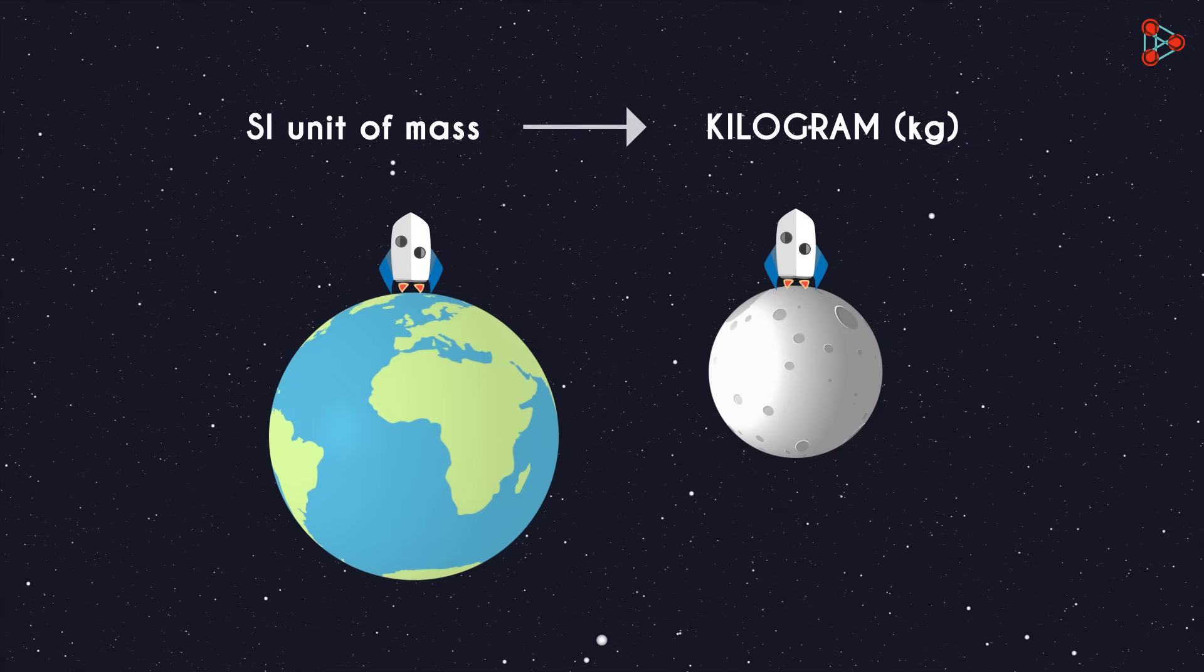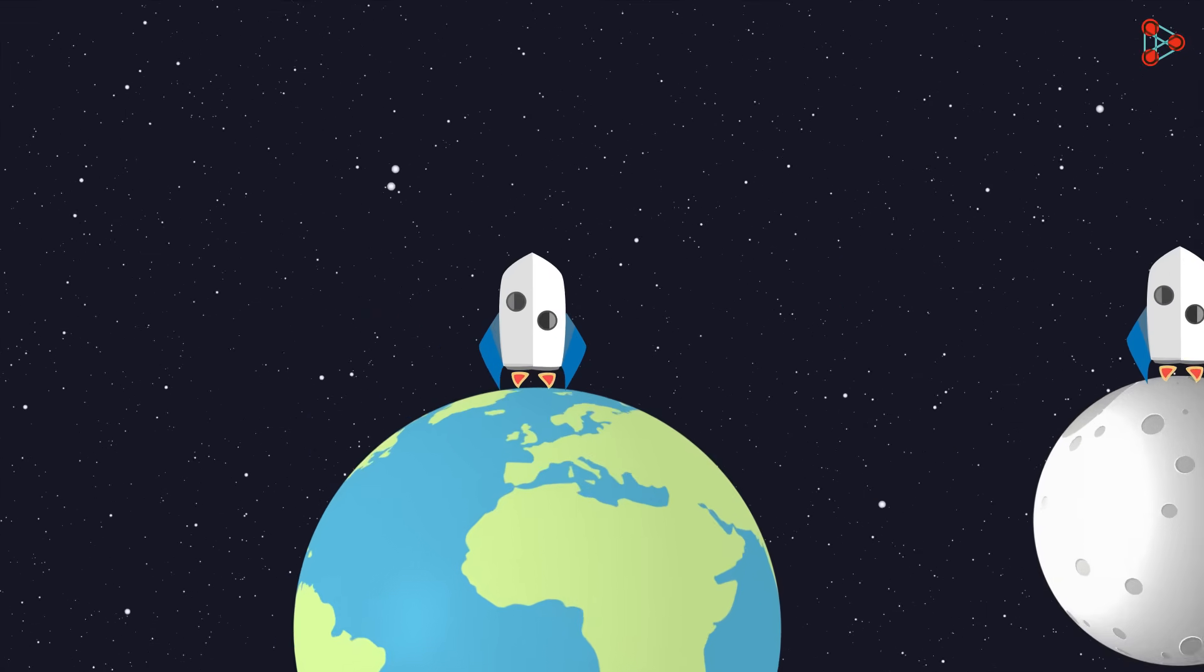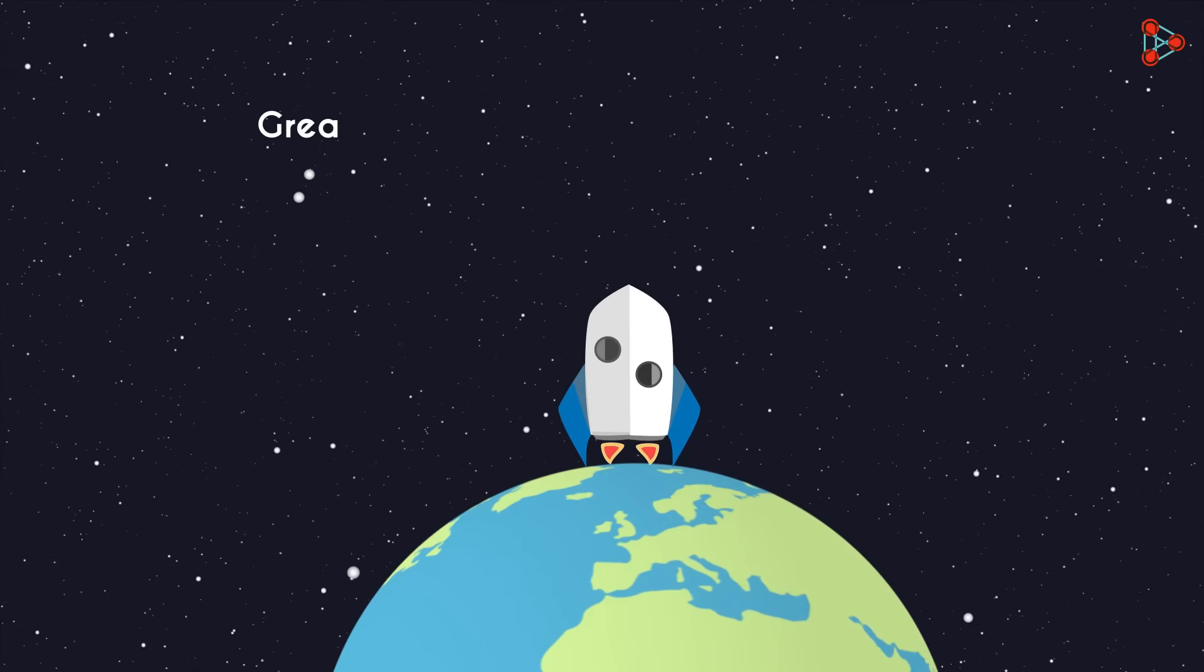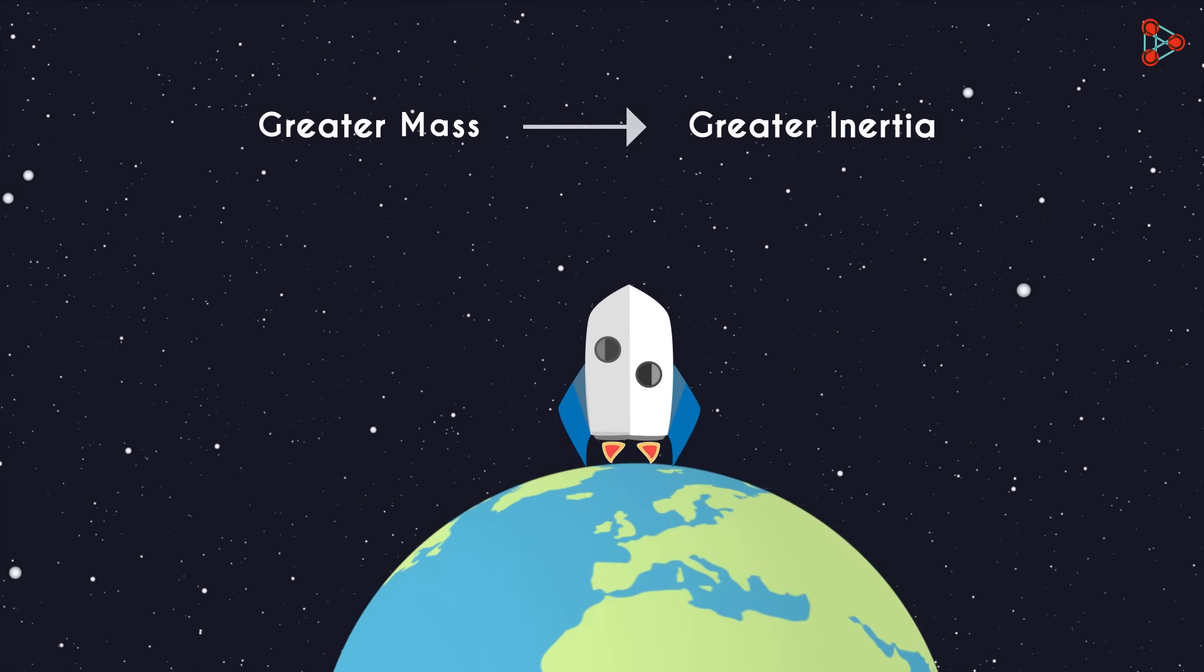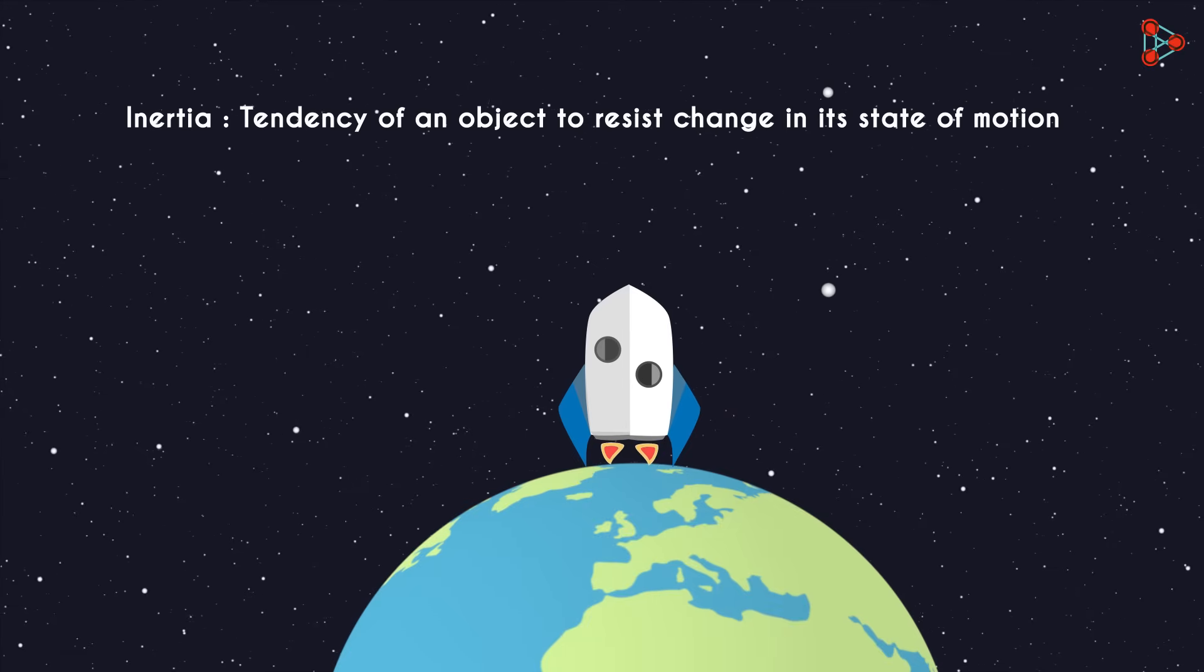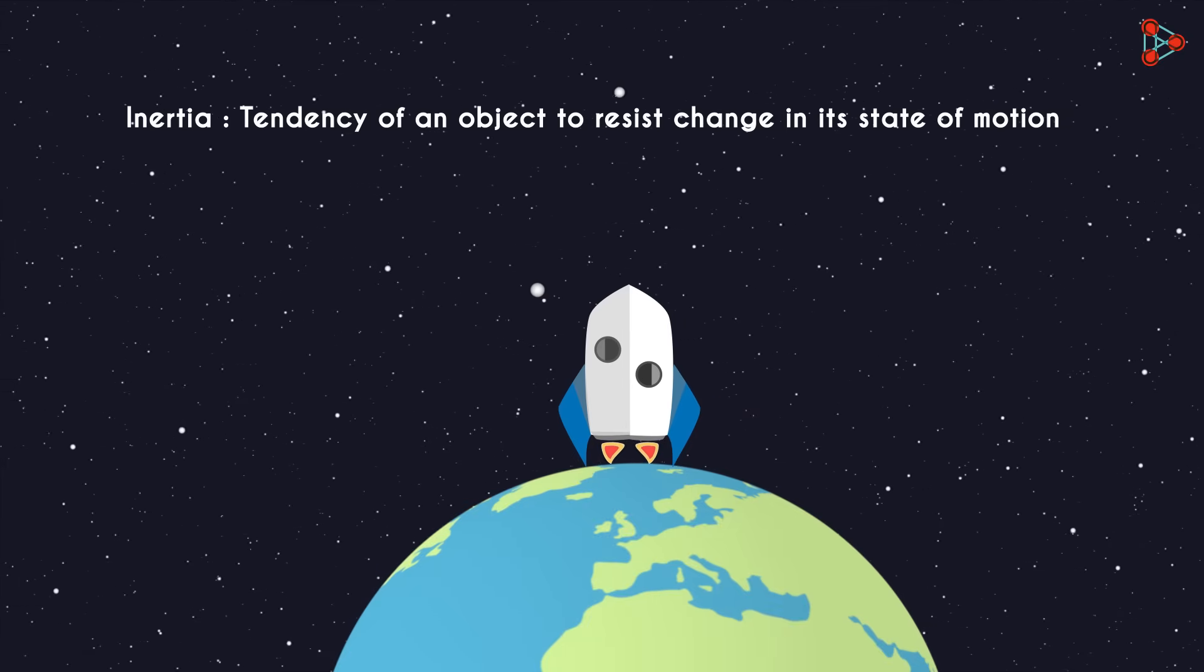Another concept we learnt about an object's mass was that it is a measure of its inertia. Greater the mass of an object, greater will be its inertia. Inertia is nothing but the tendency of an object to resist change in its state of motion.